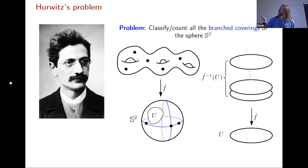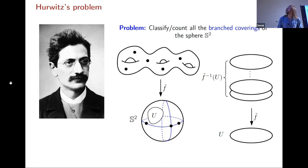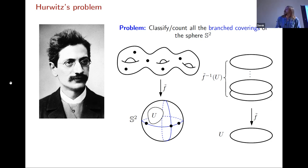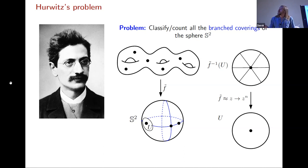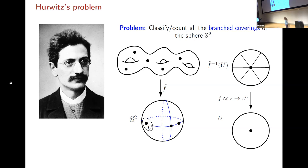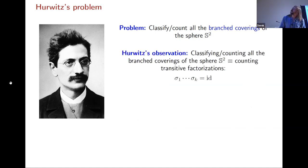Branched coverings are essentially the same as coverings, meaning that at a generic point of a surface, the pre-image looks like a copy of the neighborhood. But there are some special points on the sphere, and around each special point there is a small neighborhood such that the covering map looks like z to the power n. This is the geometric part, and Hurwitz was able to...